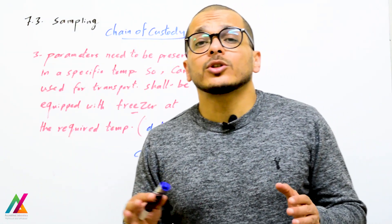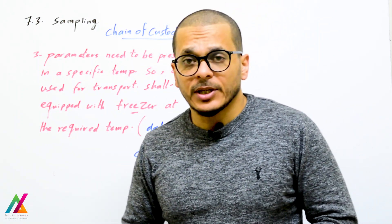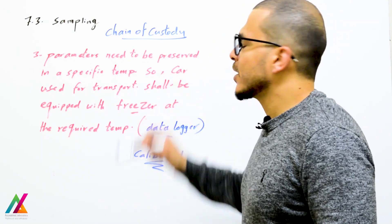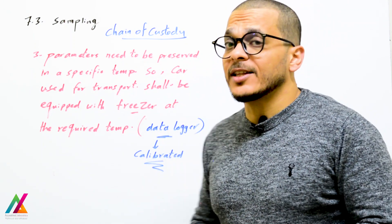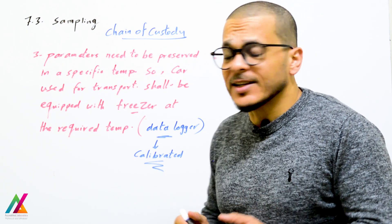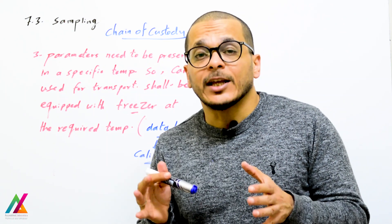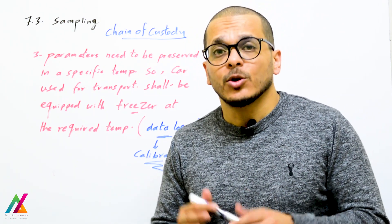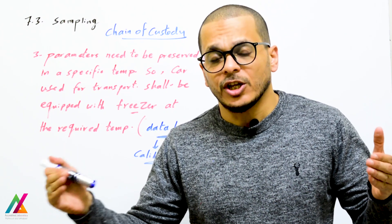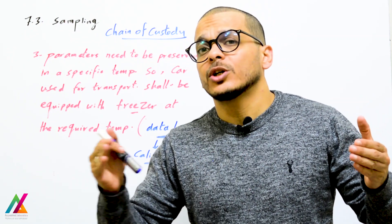Among the most important precautions during transportation of samples from the field to the lab is preservation temperature. Parameters must be preserved at a specific temperature according to the guideline used. The transport vehicle shall be equipped with a calibrated freezer set to the required temperature, and a calibrated data logger with a certificate shall record temperature during the entire transportation.